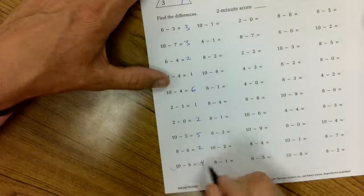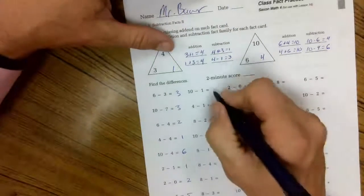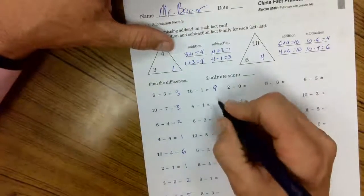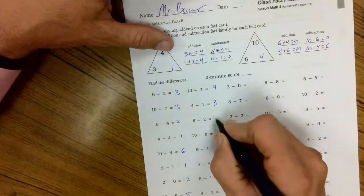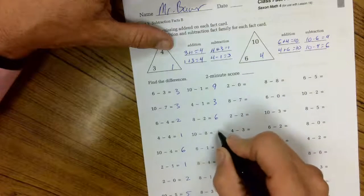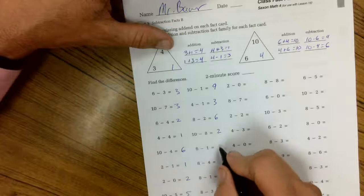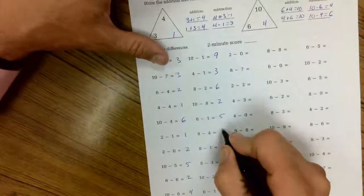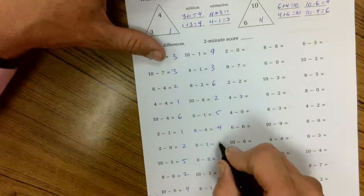That's a 10 minus 6 is 4. 10 minus 1 is 9. 4 minus 1 is 3. 8 minus 2 is 6. 10 minus 8 is 2. 6 minus 6 is 0. 8 minus 4 is 4. 8 minus 1 is 7.